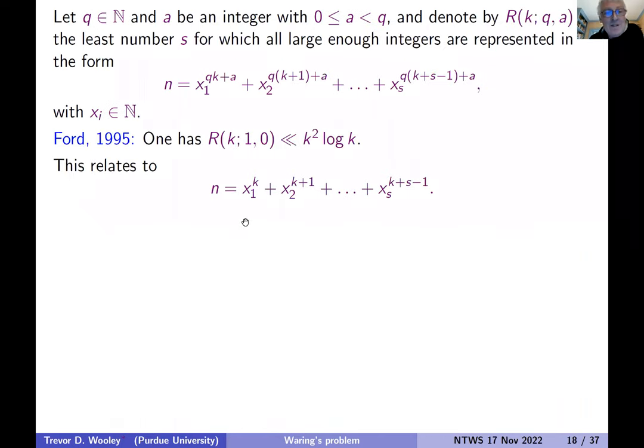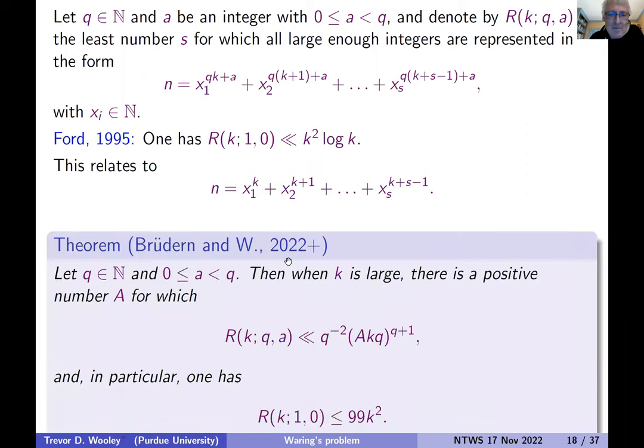So this kind of problem has also been studied by Kevin Ford in 1995. So he looked at a problem where you start with a k-th term and just add one to the exponent each time. And he showed that you could get away with k squared log k summands. So if you were at Oberwolfach last week, you saw some announcement of this. You can get an upper bound for this kind of result. And in particular, in the very original problem which Kevin looked at, instead of k squared log k, you can get away with actually a little less than 99 k squared variables.